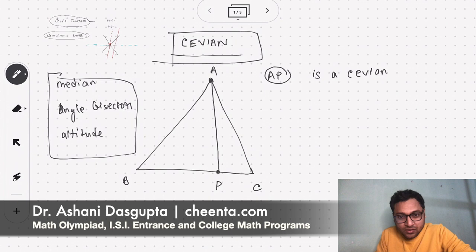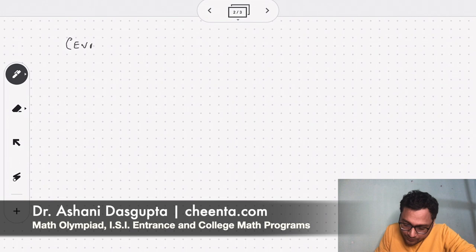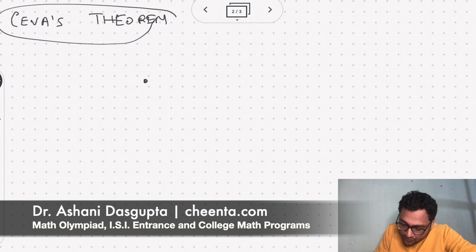Okay, so we understand what is a cevian now. Great. So we will now talk about the statement of Ceva's theorem. So here is Ceva's theorem. We often use the converse of Ceva's theorem instead of Ceva's theorem itself. So what is the statement? It says that if you have a triangle ABC, any triangle, ABC,